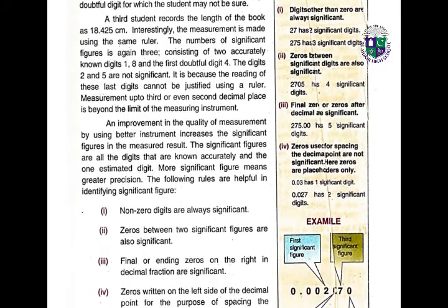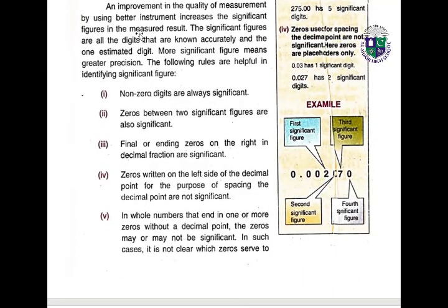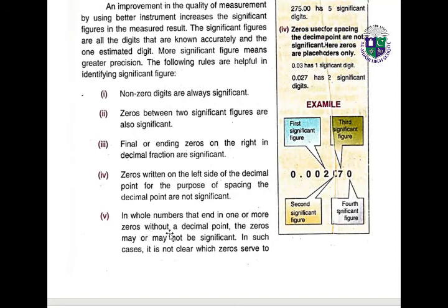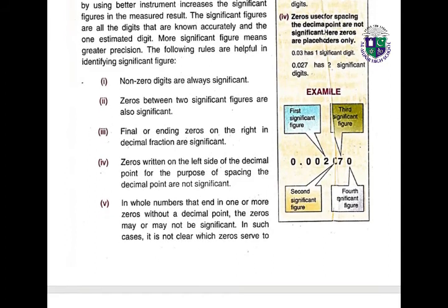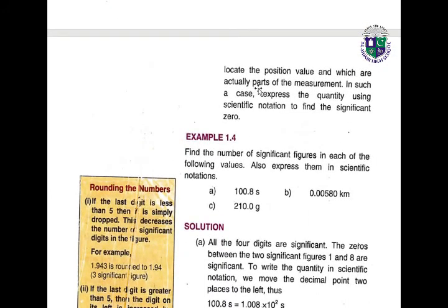An improvement in the quality of measurement by using a better instrument increases the significant figures in the result. Significant figures are all the digits that are known accurately plus one estimated digit. More significant figures means greater precision. Rules to identify significant figures: (1) Non-zero digits are always significant. (2) Zeros between two significant figures are also significant. (3) Final or ending zeros on the right in a decimal fraction are significant. (4) Zeros written on the left side of the decimal point for spacing purposes are not significant.